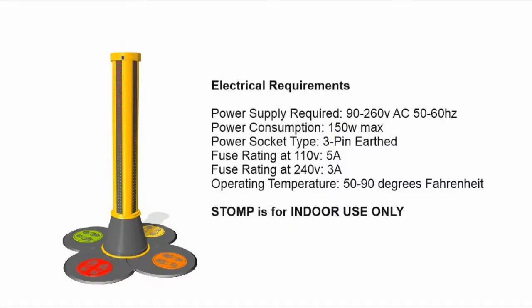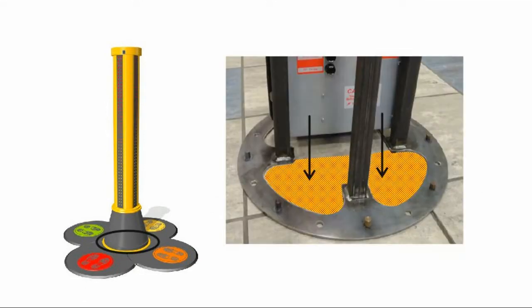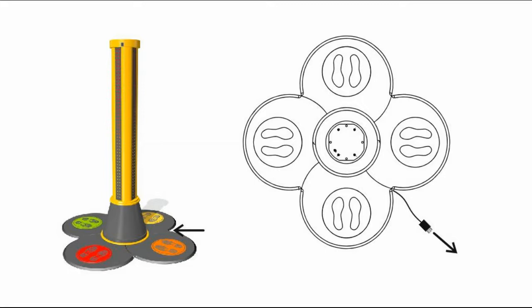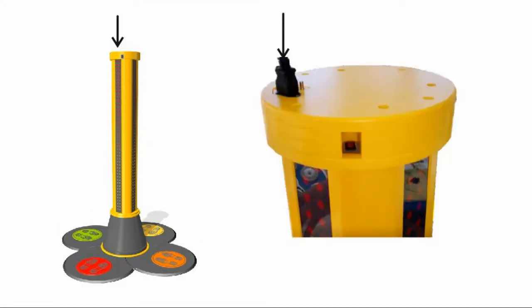There are either 2 or 3 power input options to consider when positioning your stomp. There is a space within the base frame for a floor power outlet. You can run the power cable through a channel in the underside of the mats to a wall outlet. And some stomps have the option of a top power input.